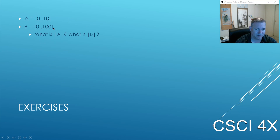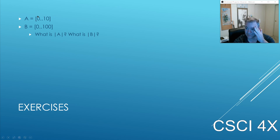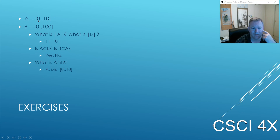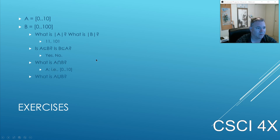A is the numbers from zero to 10, B is the numbers from zero to a hundred. Size of A is 11 — don't forget that off-by-one error, the zero counts. Size of B is 101; if it was one to a hundred it would be a hundred, but we've got the zero, so it's 101. Is A a subset of B? Yes. Is B a subset of A? No — all elements of A are in B. The intersection is the numbers from zero to 10 — in other words, A. The union is B, since all elements of A are duplicates within B.